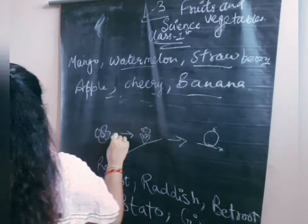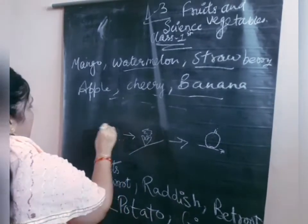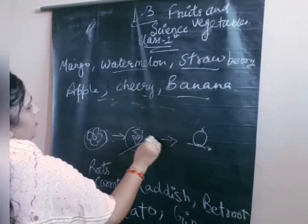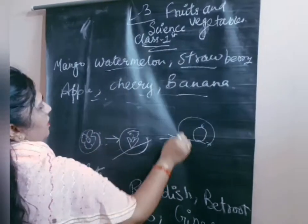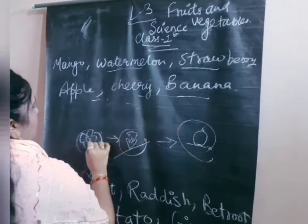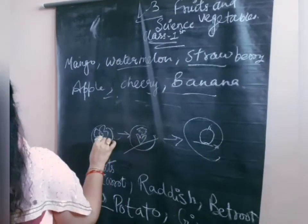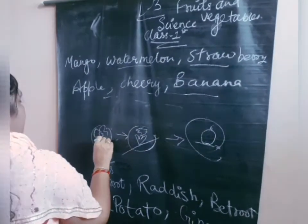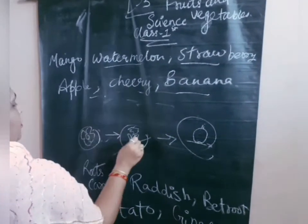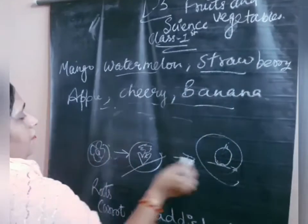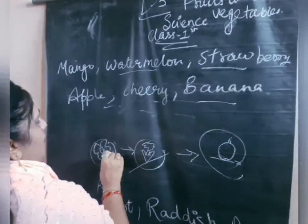Now have you seen this? This is a flower, this is a petal, and this is a fruit. Fruits come from flowers. This is a fruit which comes from flowers.